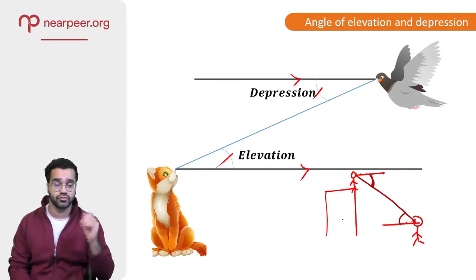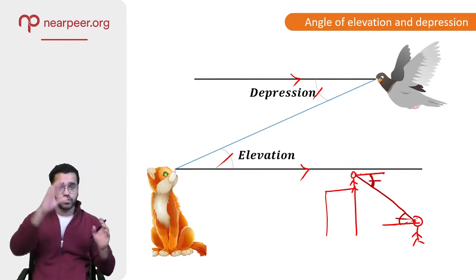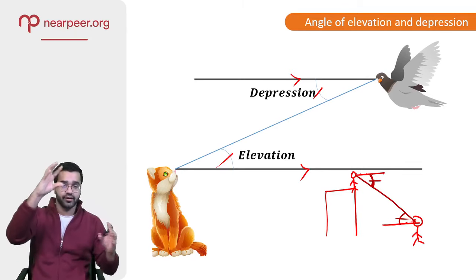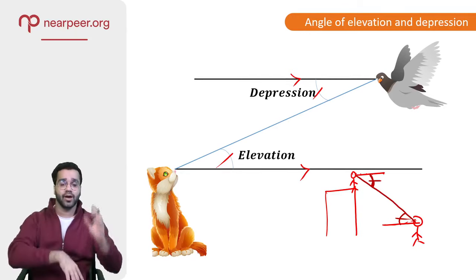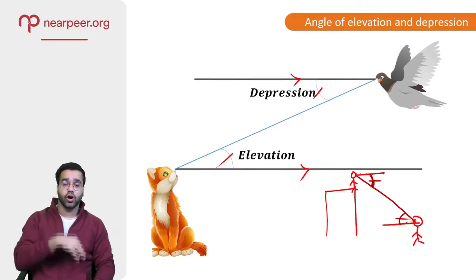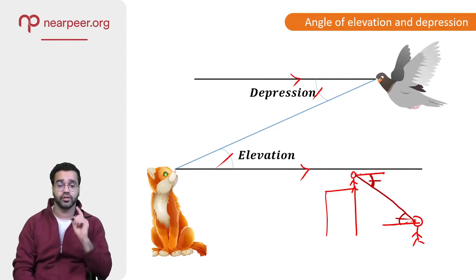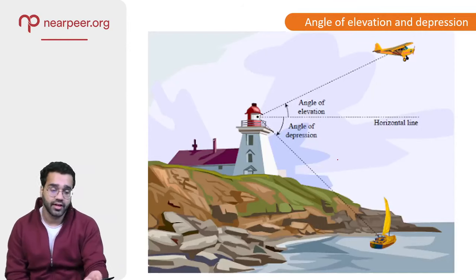Angle of depression and angle of elevation are always measured from the horizontal line of sight, and they will always be equal. So when two people are looking at each other from different heights, the one looking up has the angle of elevation and the one looking down has the angle of depression — both measured from the horizontal line of sight.